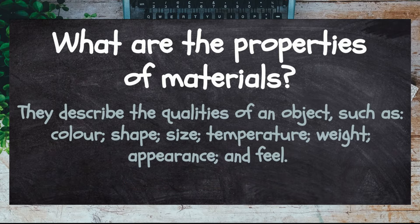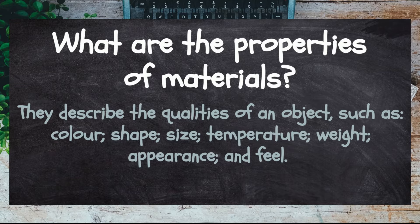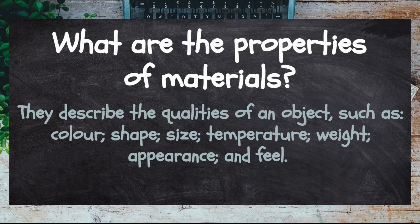Properties describe qualities of an object such as color, shape, size, temperature, weight, appearance, and feel. Let's look at some different properties we can use to describe different materials and objects.